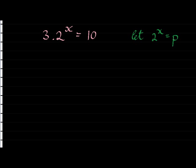So instead of 2 to the power of x, I'm going to write p. 3p is equal to 10. And now my aim is just going to be to solve for p first. So it's quite easy. Divide by 3 on both sides. And I get p is equal to 10 over 3. Now that's 3.333. I prefer leaving it like that.